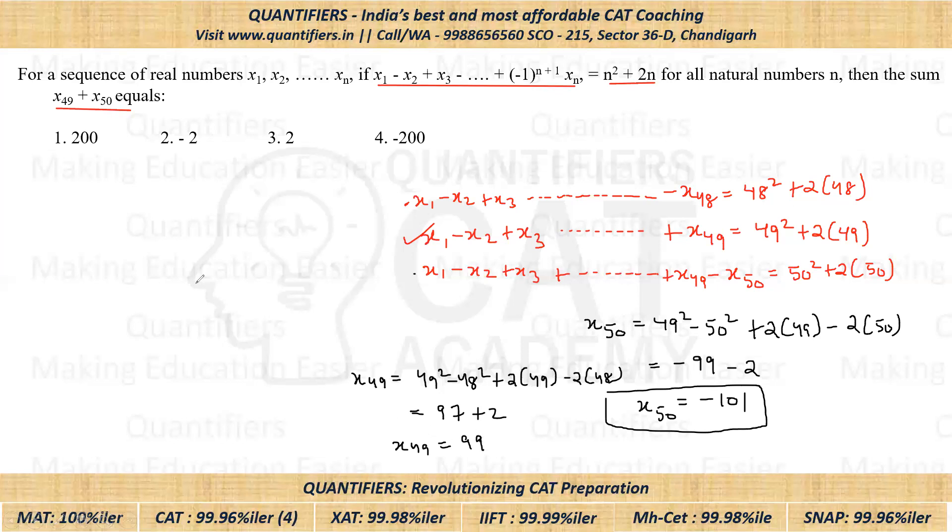So if we add both, x₄₉ plus x₅₀, then our answer is how much will come? That would be 99 minus 101. So the answer would be negative of 2. Negative 2, option 2 is the correct answer. I hope this is clear to everyone. Thank you everyone.